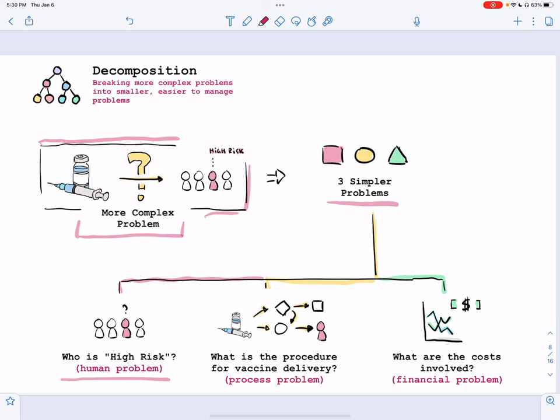Who is or who are the high-risk people? Who is the high-risk group? This is a human problem. What is the procedure for vaccine delivery? This is a technical or process problem. And finally, what are the costs involved, which is a financial problem.